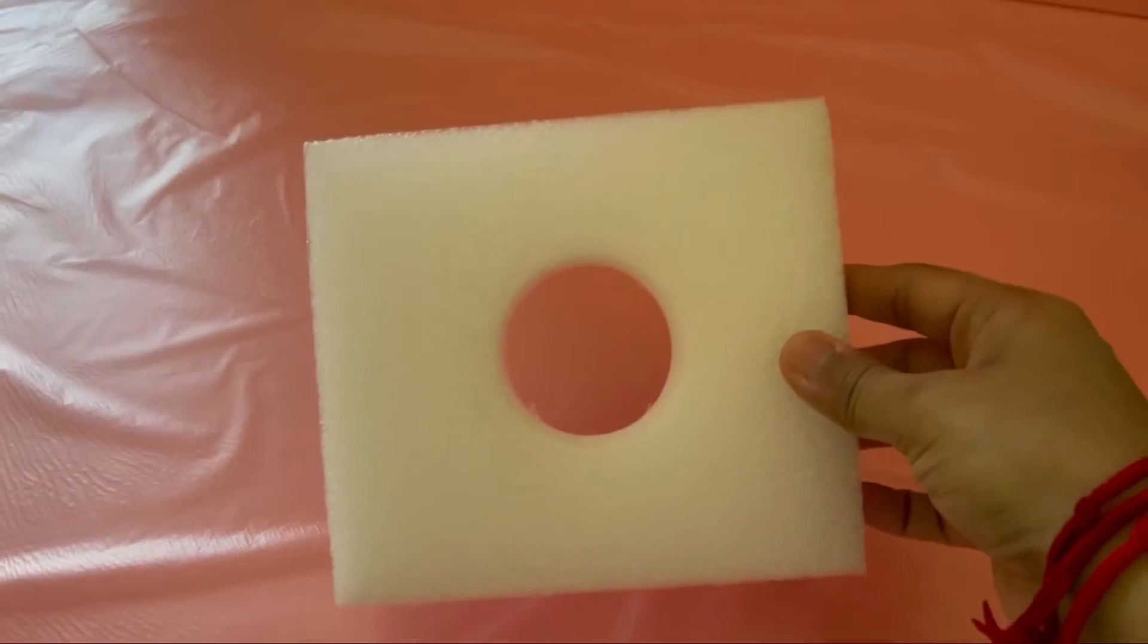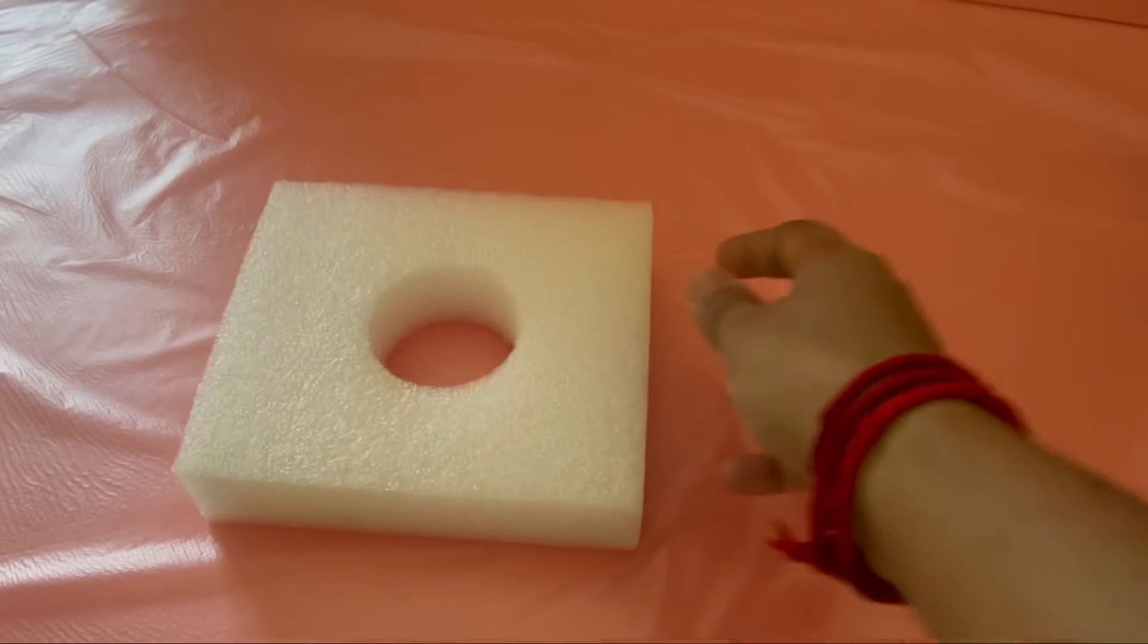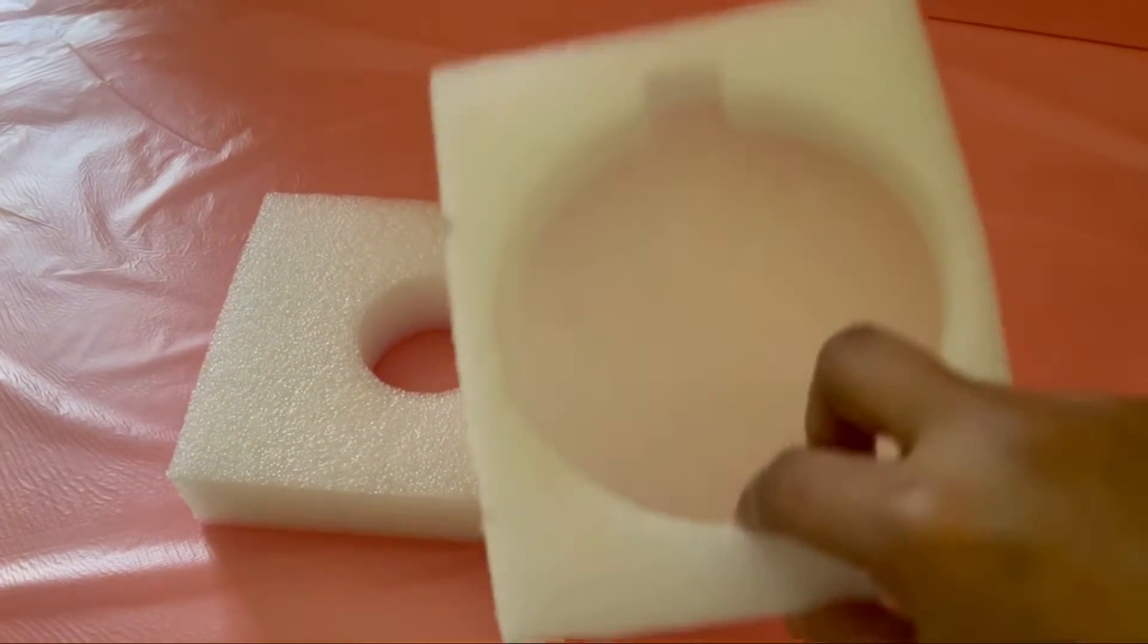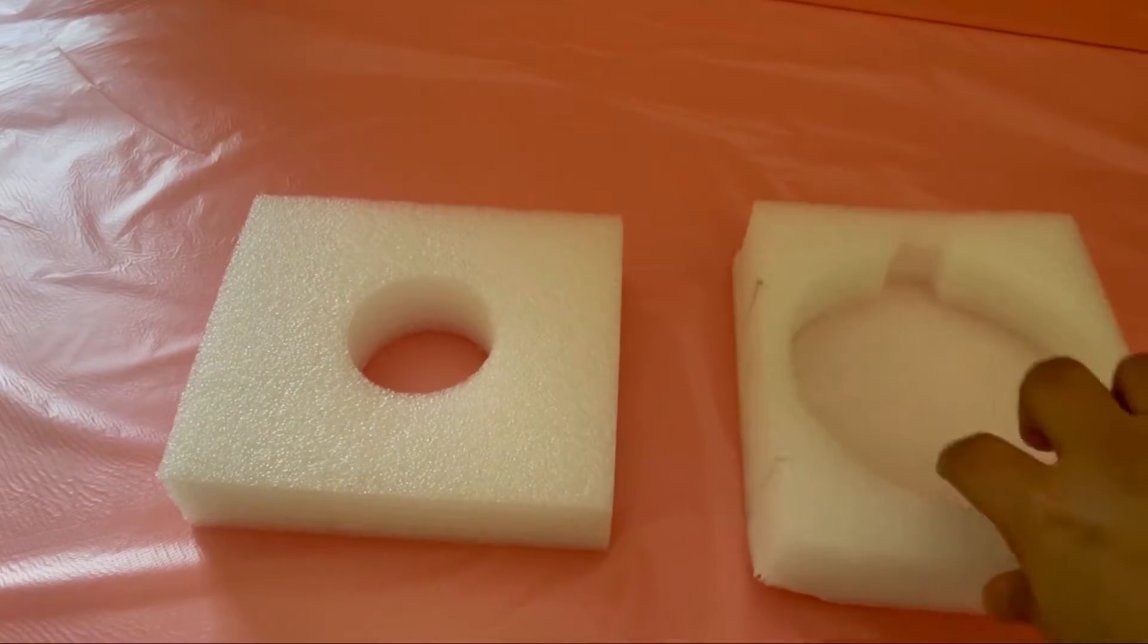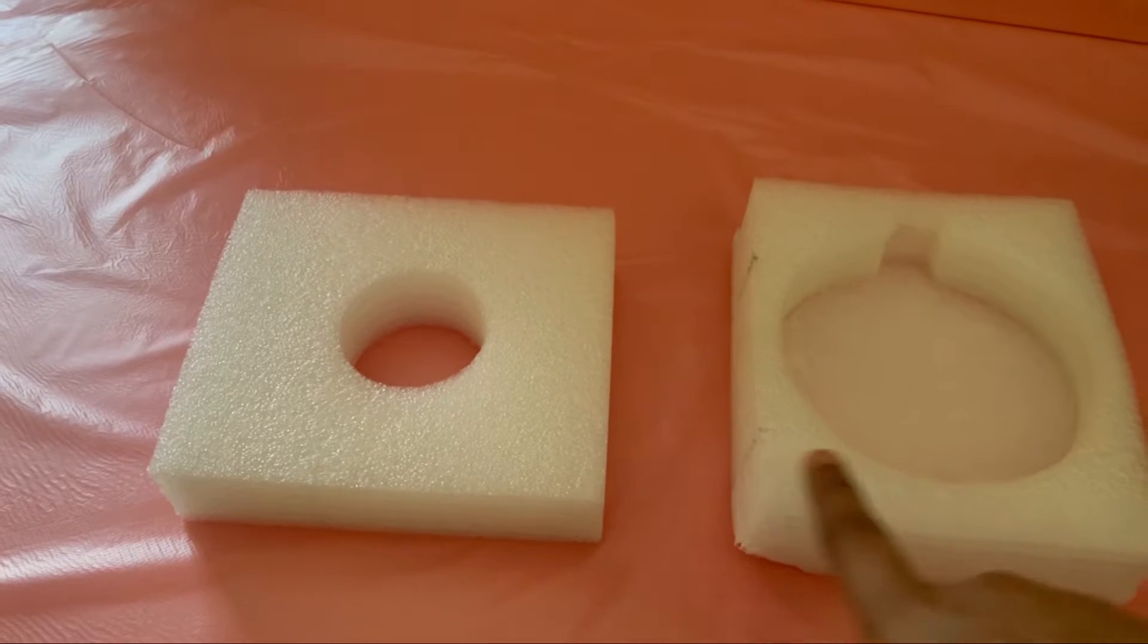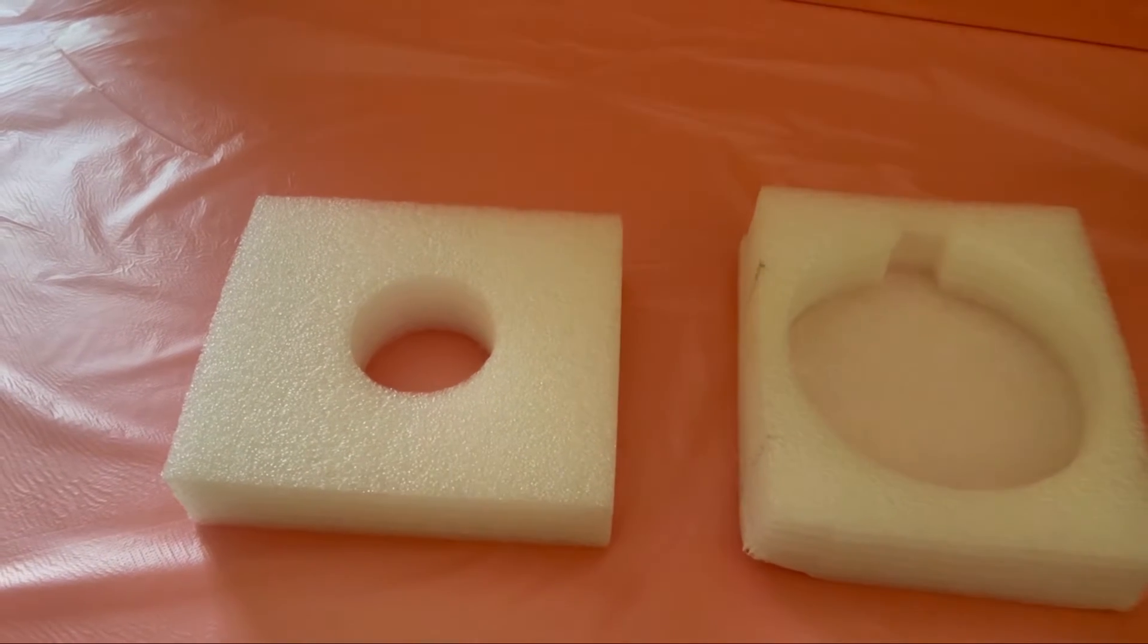Now let's take two sheets of cardboard. This could be even a thermocol sheet followed by a sponge which has a hole in it. This you could find in any apparel boxes which we may get.